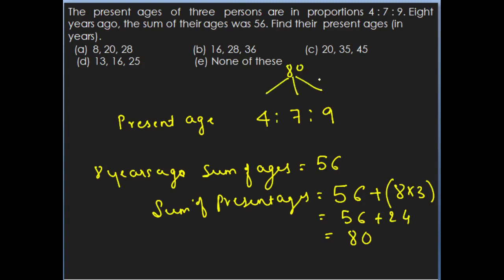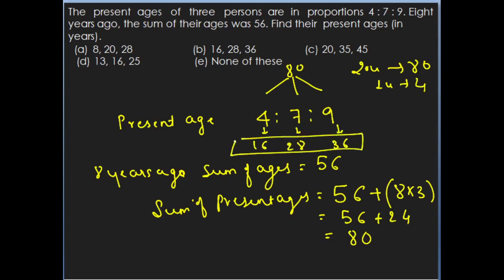The sum of ratios is 4 plus 7 plus 9 equals 20 units equals 80. Therefore 1 unit equals 4. Hence: 4 units is 16, 7 units is 28, and 9 units is 36. So 16, 28, and 36 years will be the answer.